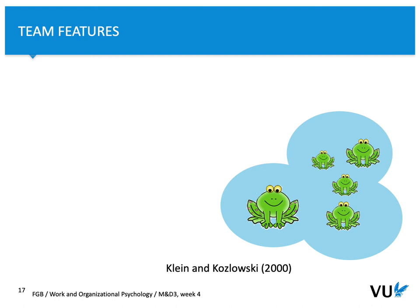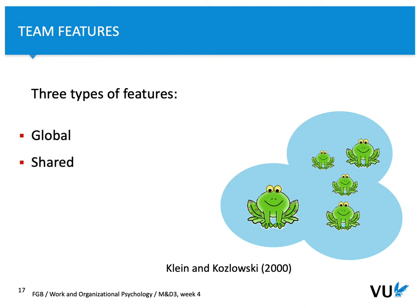Based on the seminal paper by Klein and Kozlowski, we know that teams can be characterized using three types of features: global features, shared features, and configural features.